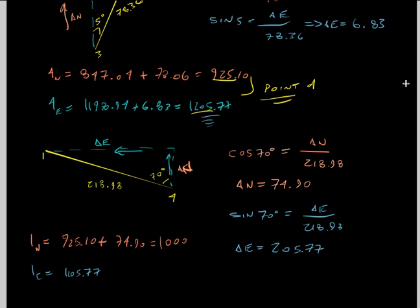Minus—we're going negative now—minus 205.77. So that's 1,000.